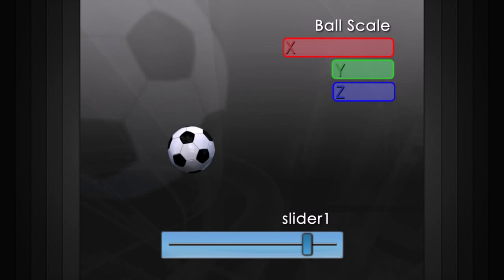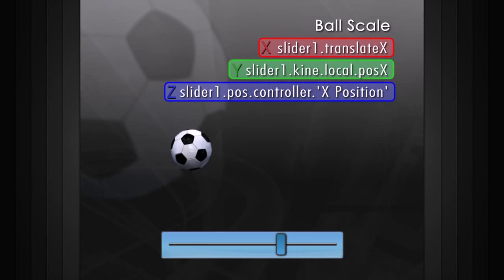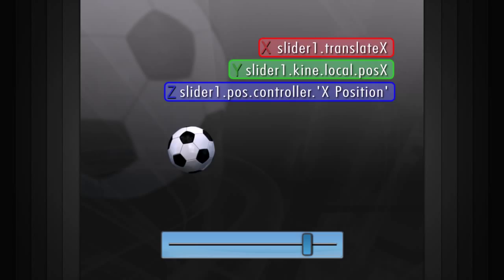Expressions let you create your own controls through a mathematical equation that manages one of the object's attributes. Expressions are usually written as lines of code, but since the language of the code varies from program to program, we'll learn about expressions in general terms.